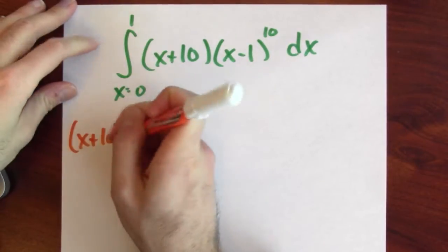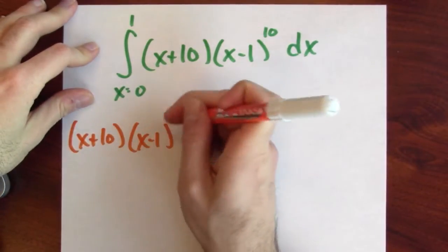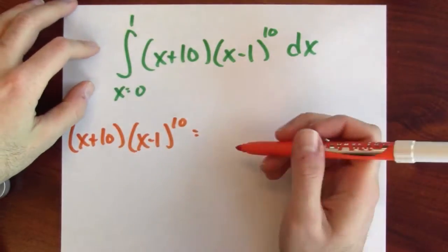Your first inclination might be, oh, I know what to do. Just have no fear. I'll just expand everything in sight. So we've got x plus 10 times x minus 1 to the 10th, which you could expand by the binomial theorem if you want.